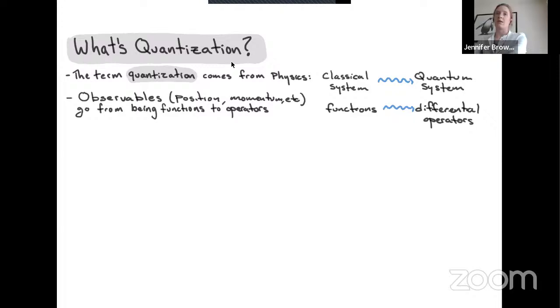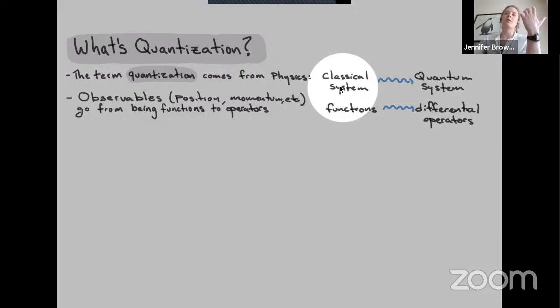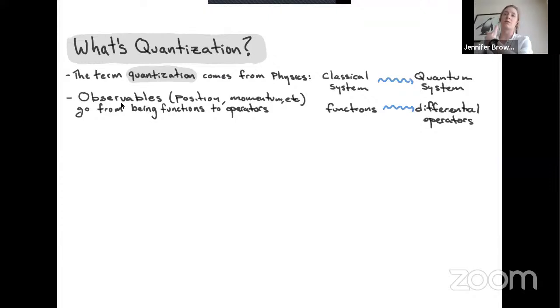The term quantization comes from physics, where it describes the process of starting with some classical system and then describing the corresponding quantum version of that system. Under this translation, observables — things like position, momentum, etc. — go from being functions to being operators. So we have this transition from functions to operators.